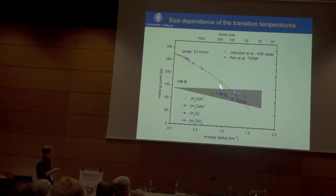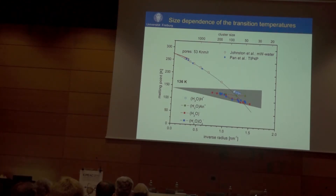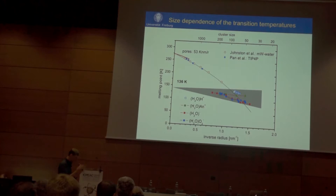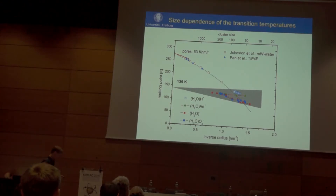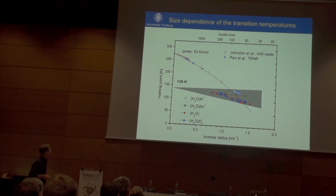Summarizing these results and comparing to theoretical predictions, the transition temperatures we are seeing converge to something in the range of 140 Kelvin rather than rising as predicted. This is not a big surprise because the calculations looked only at the crystalline core of the cluster, whereas we are working in a size range where there is actually no crystalline core — we are looking only at the more-or-less amorphous shell. The question is whether there is something special about 140 Kelvin, and in fact there is: this is the glass transition temperature of amorphous ice.